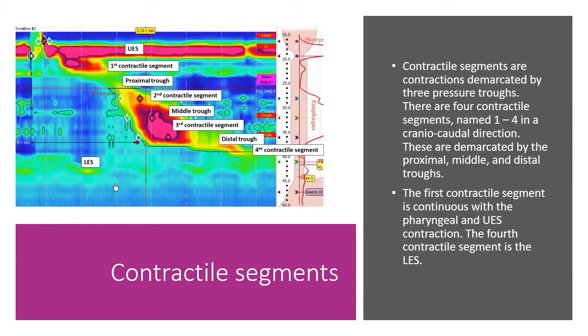Contractile segments are contractions demarcated by three pressure troughs. There are four contractile segments, named 1 to 4, in the craniocaudal direction. These are demarcated by the proximal, middle, and distal troughs.